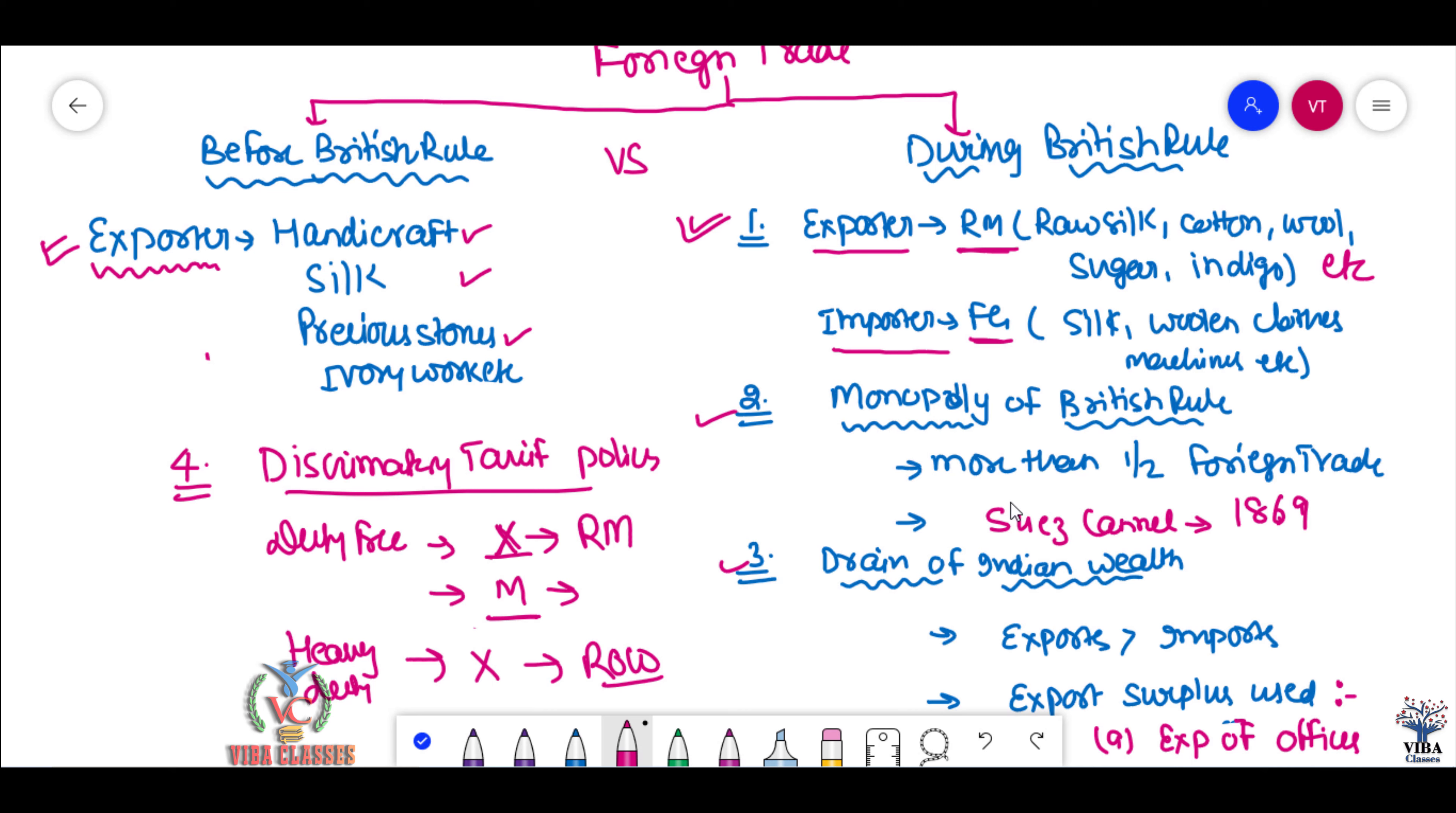For this, a very important thing was opened in 1869. In 1869, you might get a question in one marker, so remember when the Suez Canal was opened. The Suez Canal opened in 1869, which made the movement of goods from Britain to India more easy and its transportation cost was reduced. This also opened its benefits, but you can see in which way it was a systematic way of controlling foreign trade.